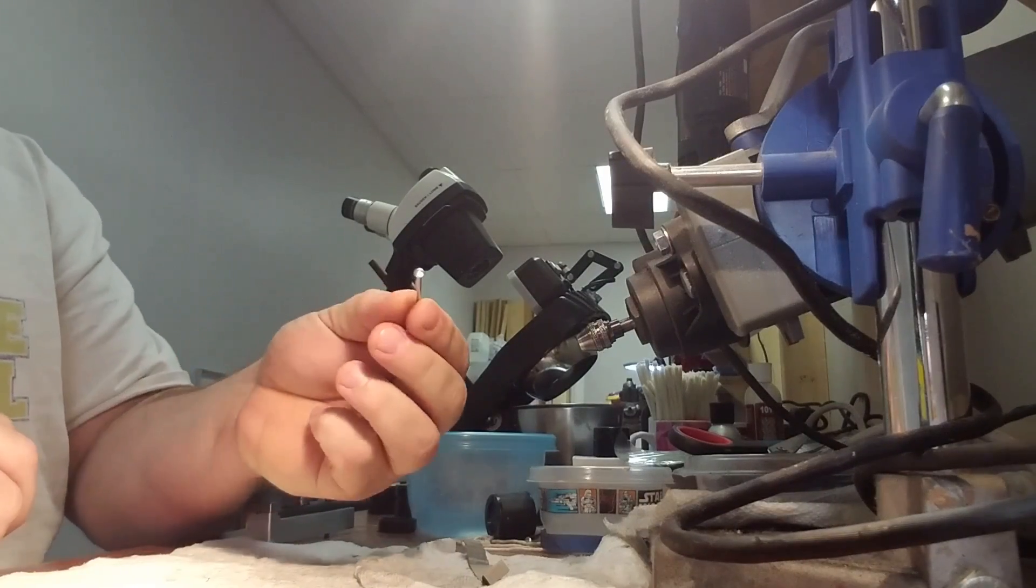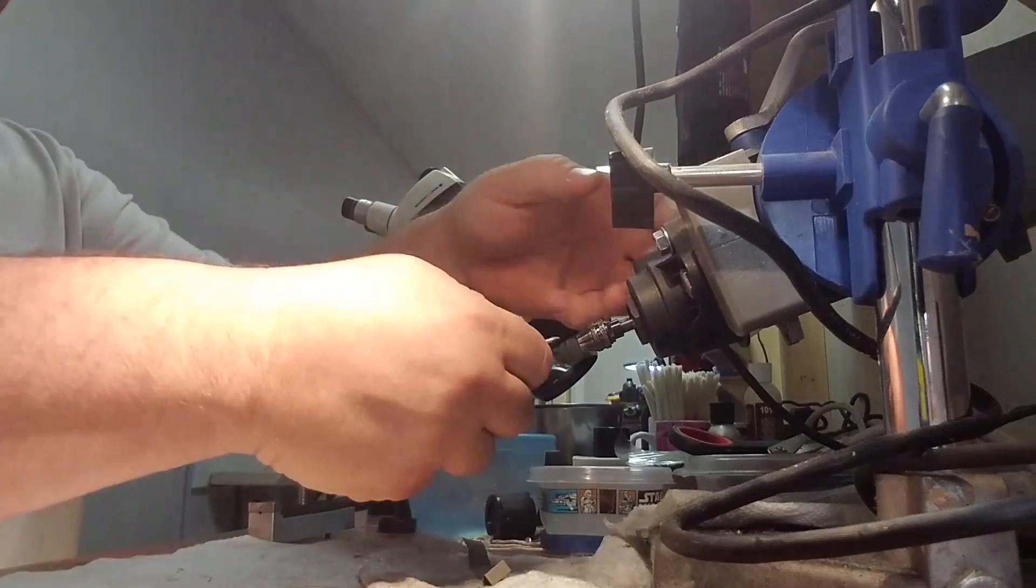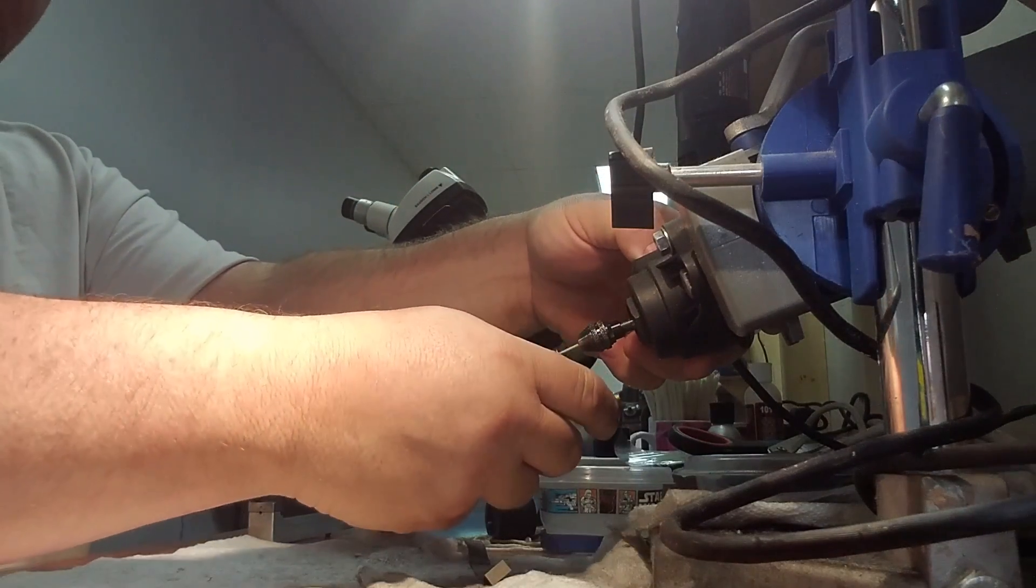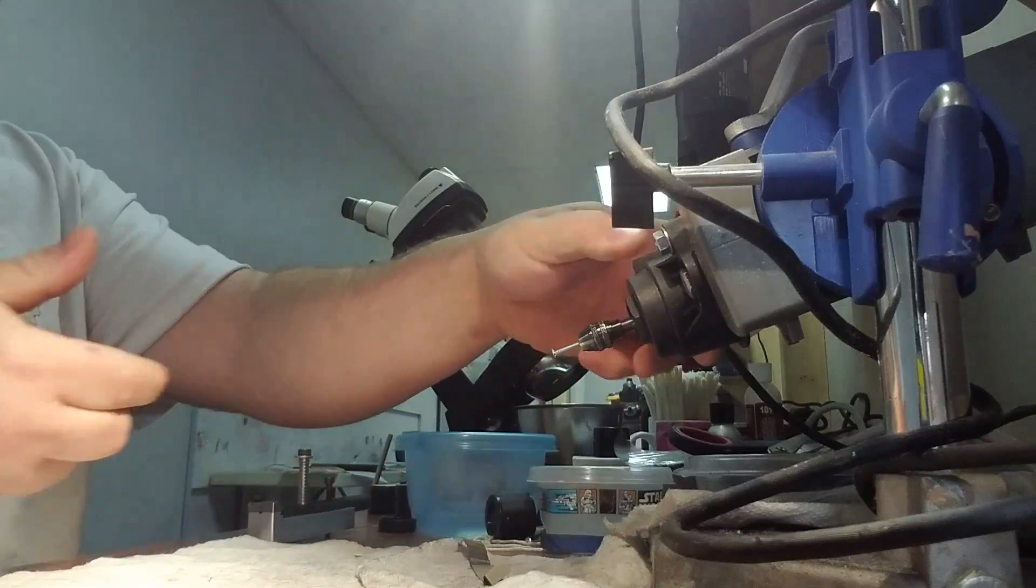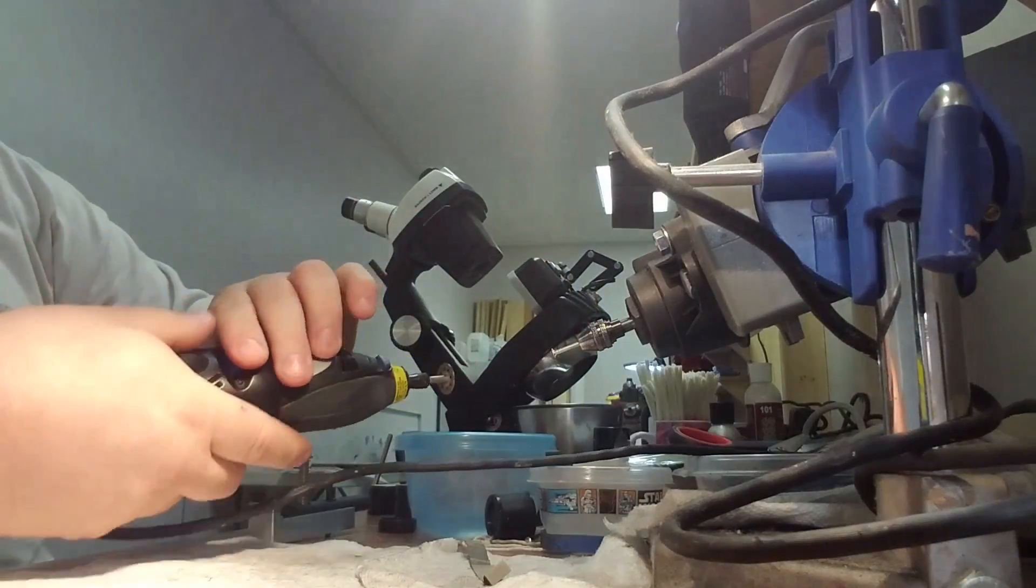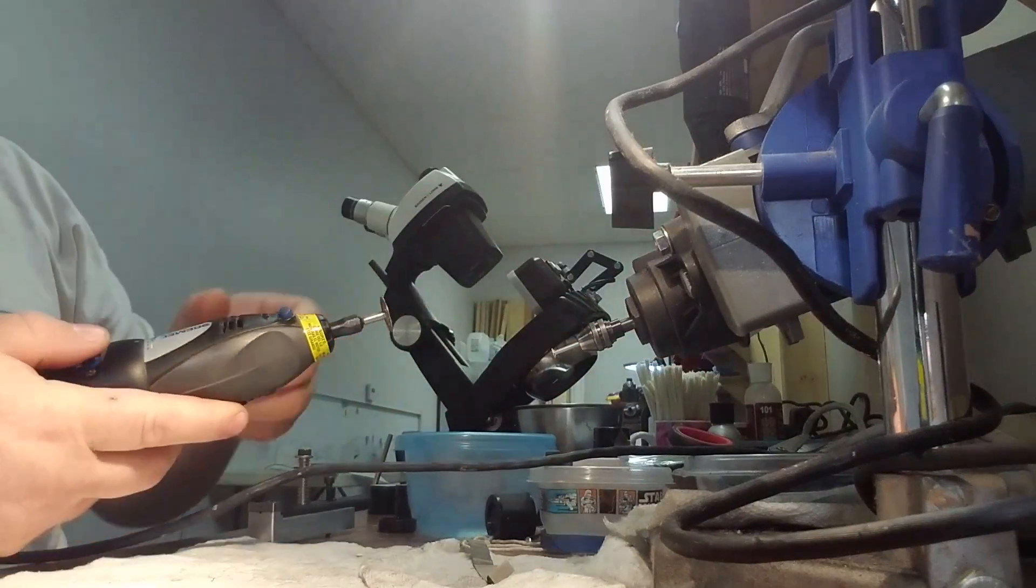All right, how to bend an axle without a bending tool. You need a Dremel or a drill press to cut a groove into the axle where you want it to bend. Make sure you wear eye protection.